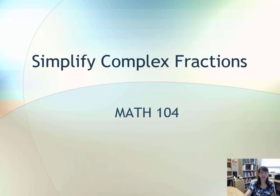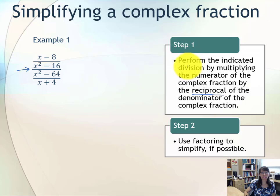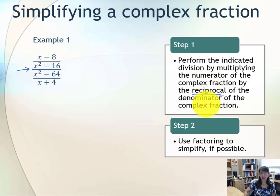In this video, we'll talk about how to simplify complex fractions. If you have a complex fraction that consists of a single fraction being divided by another single fraction, you can follow these steps. We'll perform the indicated division by multiplying the numerator by the reciprocal of the denominator — a lot like keep-change-flip. And finally, you'll use factoring if possible to simplify your final answer.